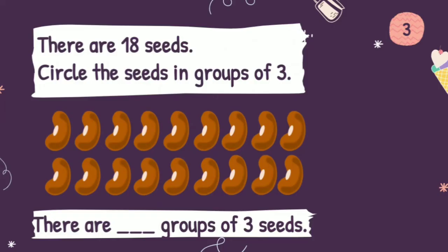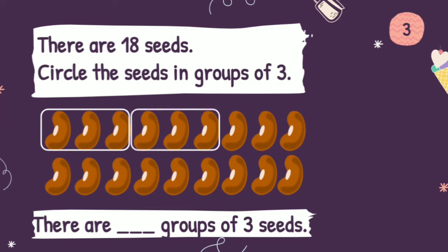This is the last example. There are 18 seeds. Let's circle the seeds in groups of 3. So we have to answer: there are ___ groups of 3 seeds. Let's follow the instruction — circle the seeds in groups of 3. So we circle 3 seeds. If the instruction were groups of 4, we'd circle 4 seeds; if groups of 5, we'd circle 5 seeds. But since this is groups of 3, we circle 3 seeds. So 1 group has 3 seeds.